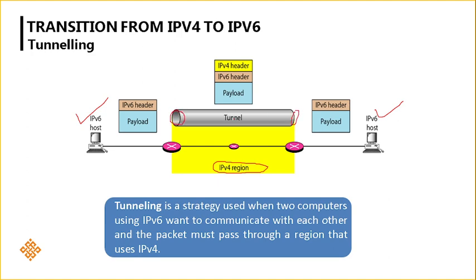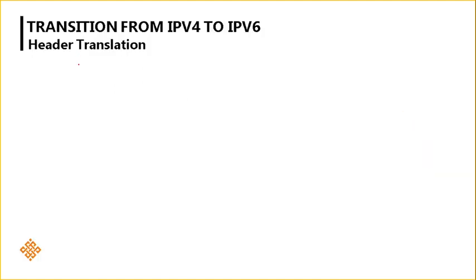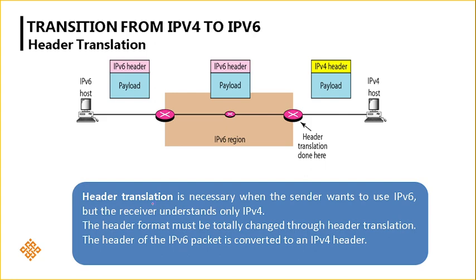What we do is create a logical connection — that is what we call tunneling. When the IPv6 packet arrives, we add an IPv4 header so it can pass through the IPv4 region. Once it crosses that region, the IPv4 header is removed, and the remaining IPv6 header is passed to the destination node. This is the tunneling technique.